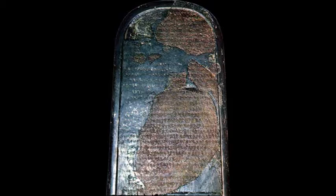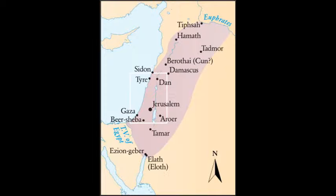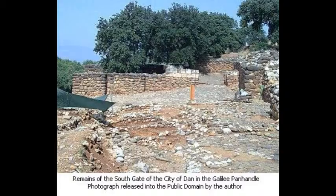The Moabite Stele and the Tel Dan inscription both reference the drought directly. Dan is a city north of Galilee. Both inscriptions mention the destruction and rebellion going on around them — these are like last testaments of the priests of the old order. What happened at the time of the Yahwist revolution was that they destroyed all the writings. The Dan Stele was used in a construction project to build a wall, and the Moabite Stele was torn down and buried.